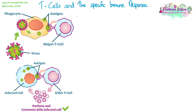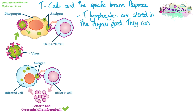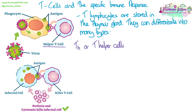T cells and the specific immune response. T cells, or T lymphocytes, are stored in the thymus gland. They can differentiate into multiple different types of T cell. T helper cells — we use a little T with a little H next to it to represent these.